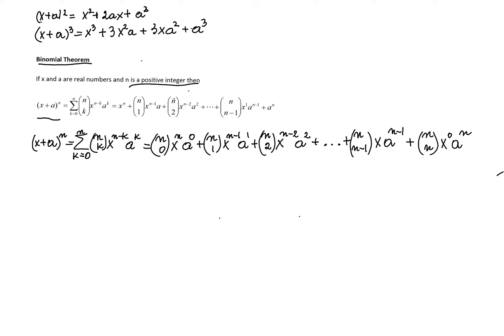The formula is that x plus a to the power n is the sum written in sigma notation in concise form as sum from k equals 0 to n, n choose k, x to the power n minus k, times a to the power k.